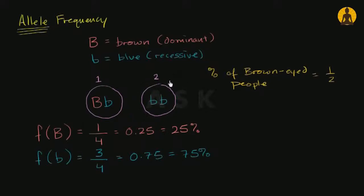But allele frequency, we're digging deeper. We're looking at the genotypes, and we're saying, well, out of the four genes here, one of them is the big B allele, so that's 25% of the gene population codes for, is the brown allele, and 75% is the blue allele.